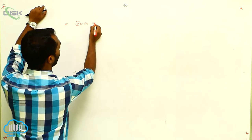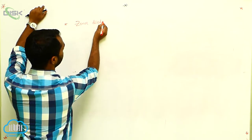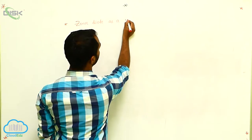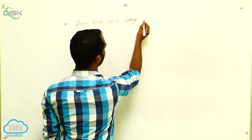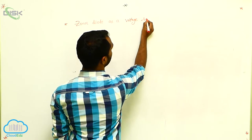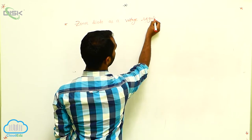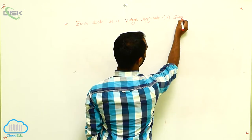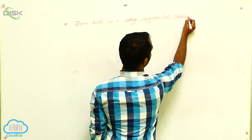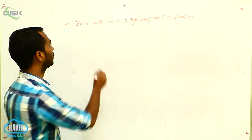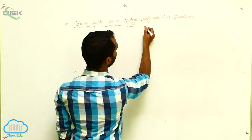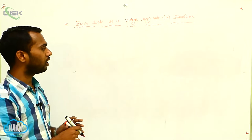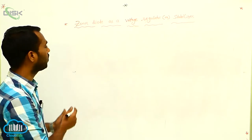Zener diode — IZ, voltage stabilizer, voltage regulator or voltage stabilizer. This is a very important circuit diagram. It is a fundamental, simple concept.